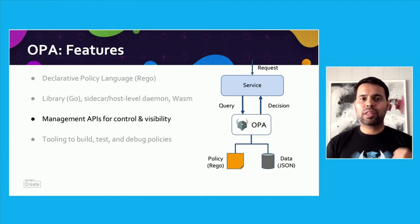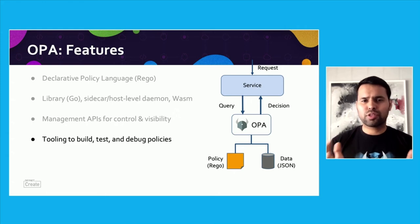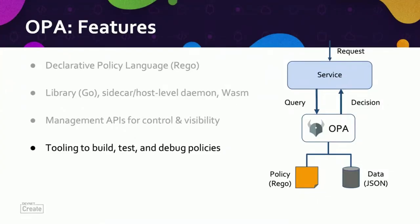Along with the core policy engine, OPA provides a rich set of tooling to unit test and debug your policies. OPA provides a unit test framework which you can use to test your policies before you deploy them. There are integrations with IDEs like VIM, VS Code, and IntelliJ which allow you to author your policies. And we also have a REGO Playground, which is an online interactive tool that helps you author and share your policies — which we'll see later in the presentation.